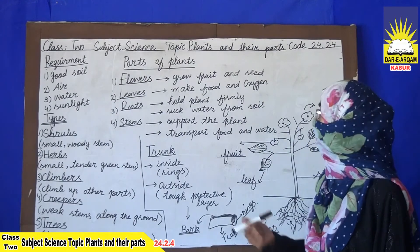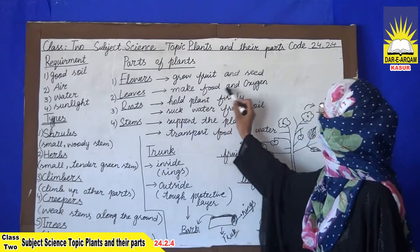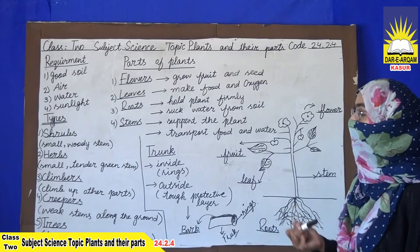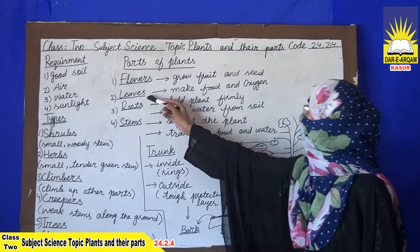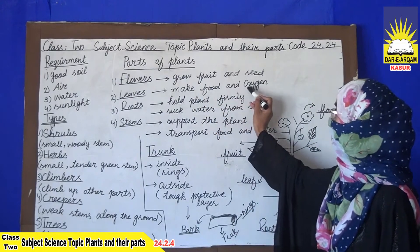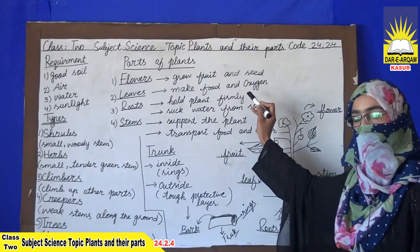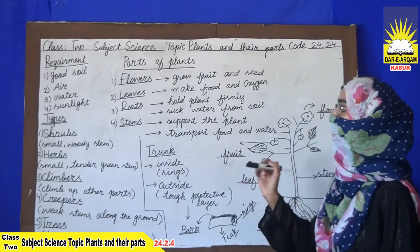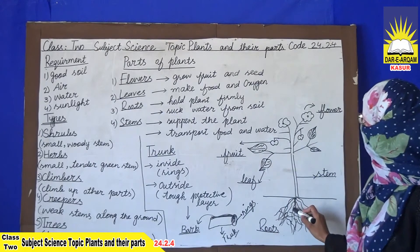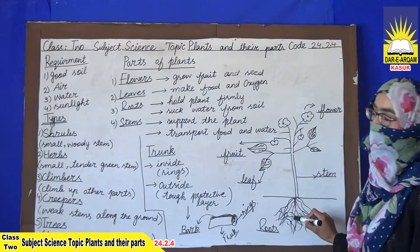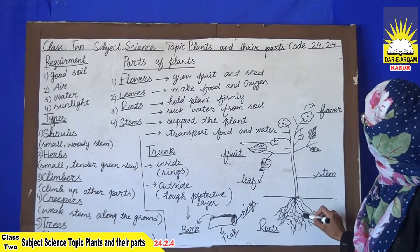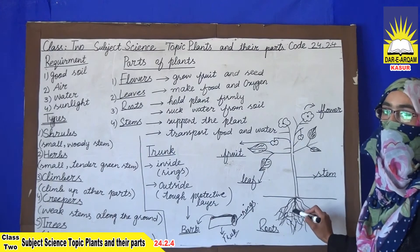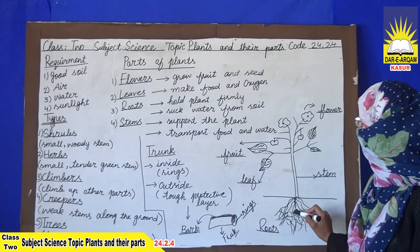Flowers grow into fruit and seeds, and they are useful for many purposes such as medicines and decoration in our homes. Leaves make food and oxygen. Plants need food to grow, and leaves produce oxygen which we use for breathing.